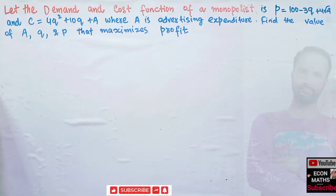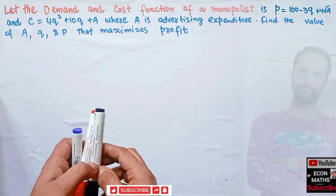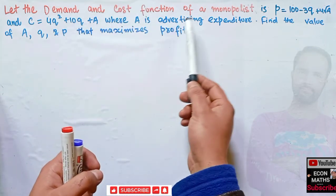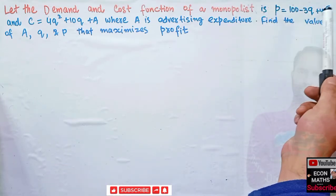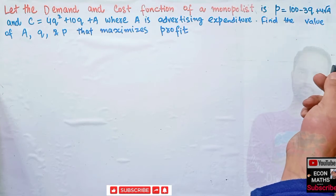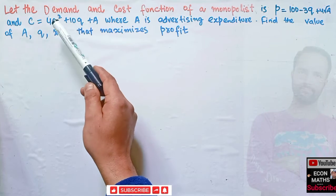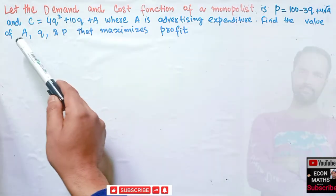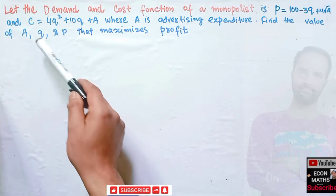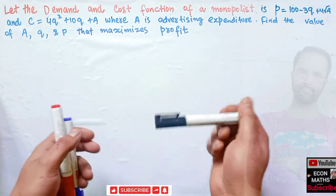In this video we will try to solve a problem on profit maximizing level of advertising expenditure, quantity, and price. The question is: let the demand and cost function of a monopolist be given. The demand function is P = 100 − 3Q + 4√A, where A denotes the advertising expenditure, and the cost function is given as 4Q² + 10Q + A. We have to find the value of advertising expenditure, quantity, and price that maximizes the monopolist's profit.